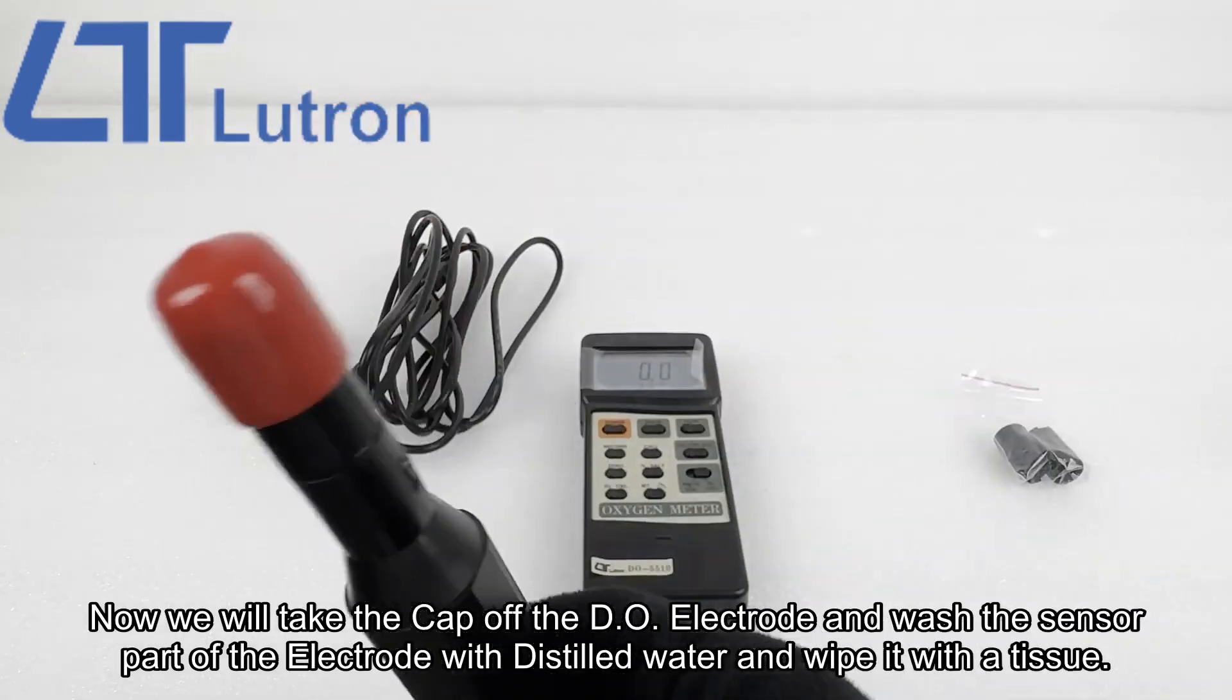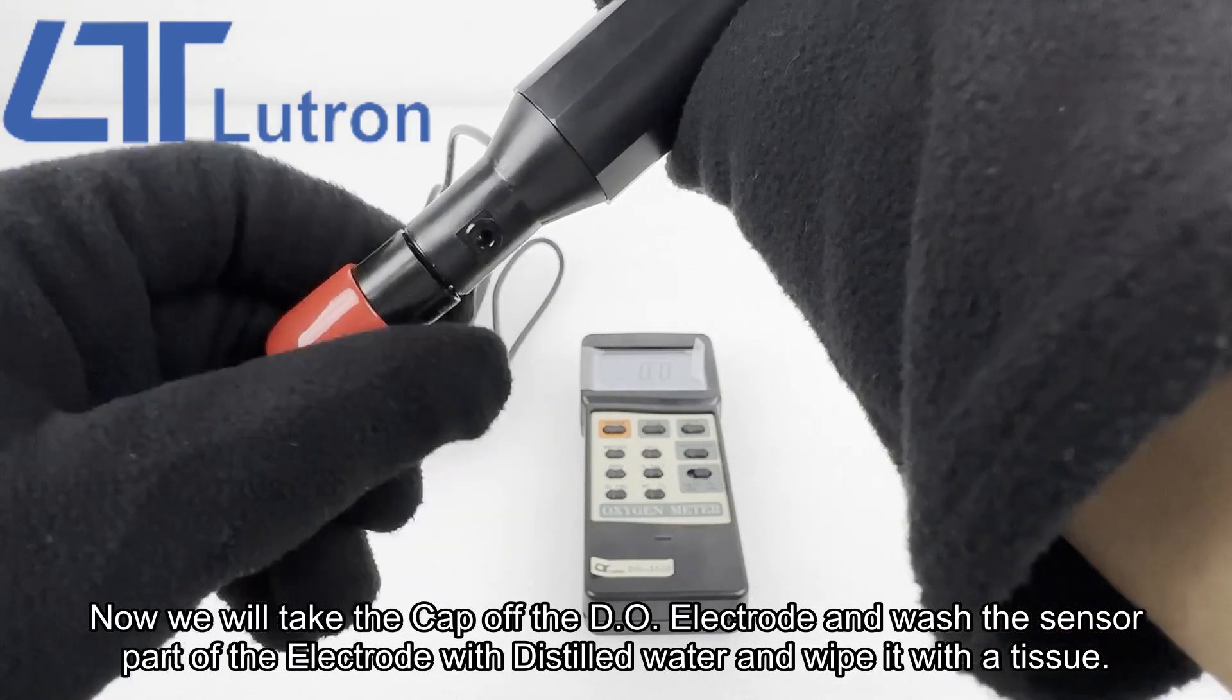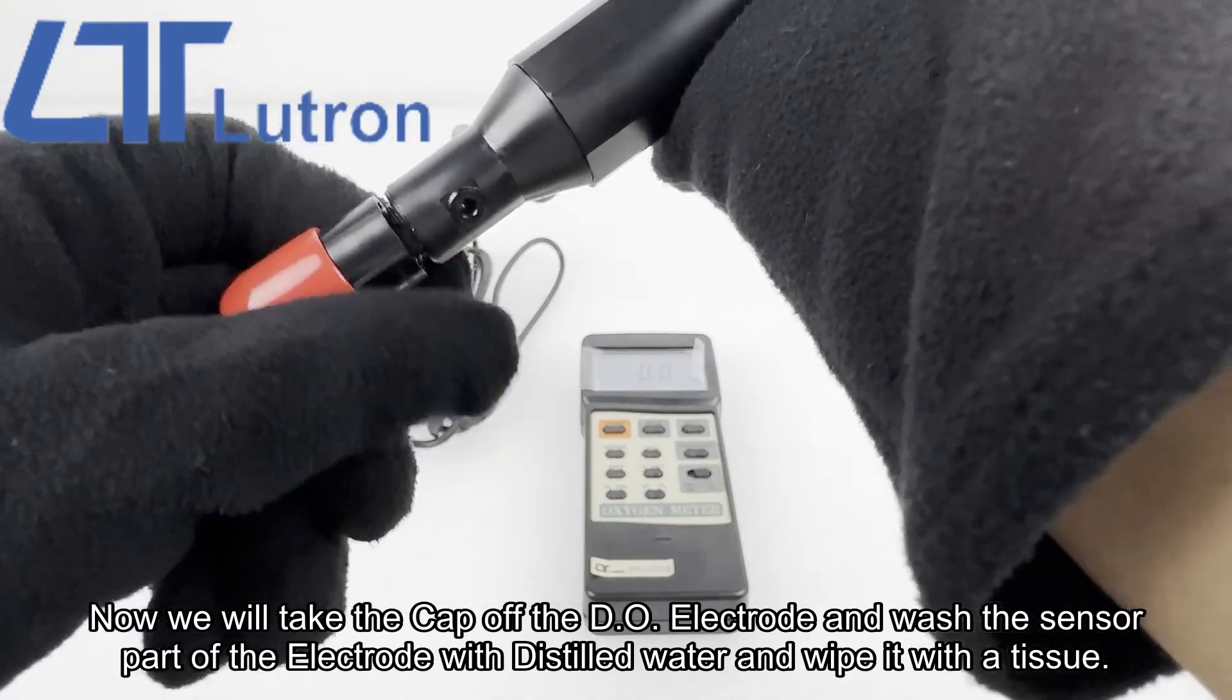Now we will take the cap off the DO electrode and wash the sensor part of the electrode with distilled water and wipe it with a tissue.